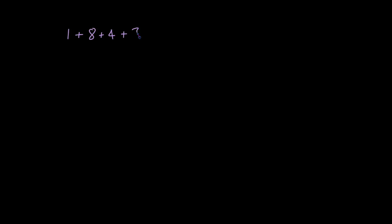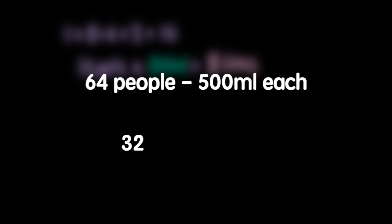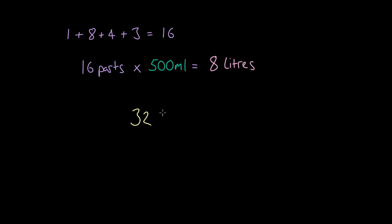Adding up the numbers in my ratio, where each part equals 500 millilitres, I have 1 plus 8 plus 4 plus 3, totalling 16 parts. 16 parts times 500 millilitres gives me 8 litres of this mocktail. I know I have 64 people coming who all want 500 millilitres each, and as we've already said, I'm going to need 32 litres in total. 8 litres divides into 32 litres exactly 4 times, so that means I need 4 times as much of every part.